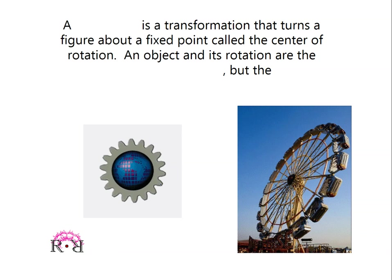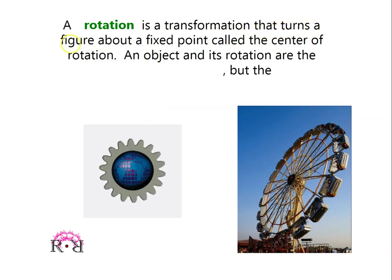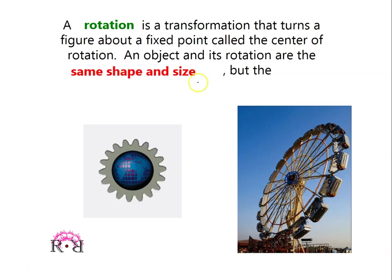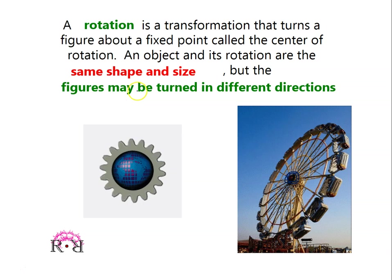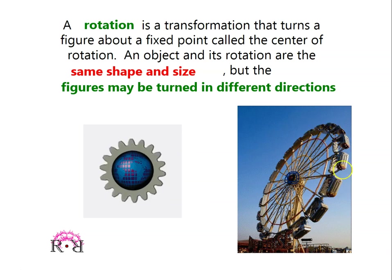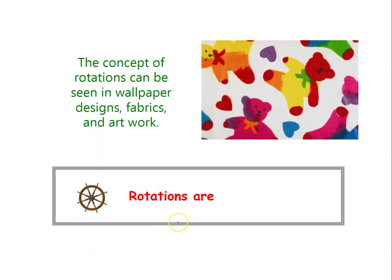So here — when you are going to ride in a Ferris wheel, how does the object move? So it is rotation. A rotation is a transformation that turns the figure about a fixed point called the center of rotation. There is a fixed point and it will just only rotate. An object and its rotation are the same shape and size, but the figures may be turned in different directions. The concept of rotation can be seen in wallpaper designs, fabrics, and artwork. So rotation — the object will turn.